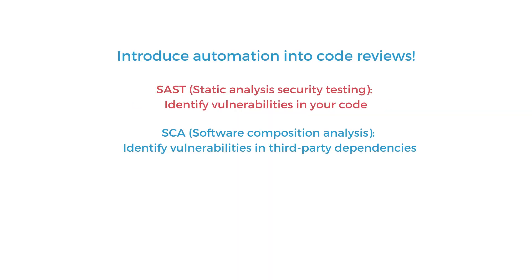Using SAST tools — static analysis security testing tools — are a great way to speed up the process. Good SAST tools identify the vulnerable patterns we talked about so you can focus on analyzing the impact and exploitability of the vulnerability. You can use SAST tools as a first step to point you to potential vulnerabilities instead of tracing code yourself. Software composition analysis tools, or SCA tools, automate the dependency tracking process — they keep track of an application's dependencies and alert you if new CVEs are found in the dependencies you use.